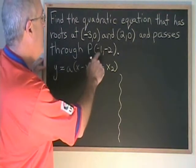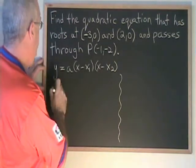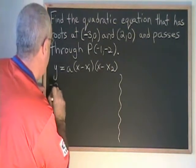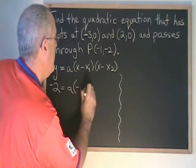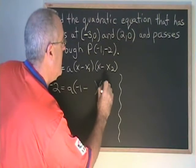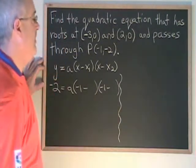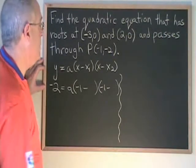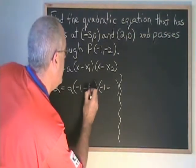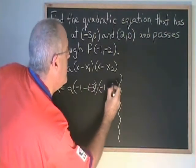Plugging the point (-1, -2) into this form, we have negative 2 equals a times negative 1 minus, and negative 1 minus over here. Plugging the roots into the x₁ and x₂ positions, we have negative 3 and 2.